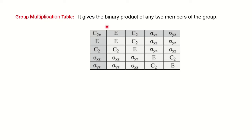For the group multiplication table, we are talking about two members of the group. The group here is C2V. For C2V, we find 2N symmetry operations where N is 2, so there are four symmetry operations total: E, C2, σXZ, and σYZ. How to find these was covered in the previous video.